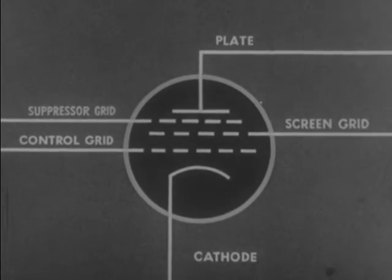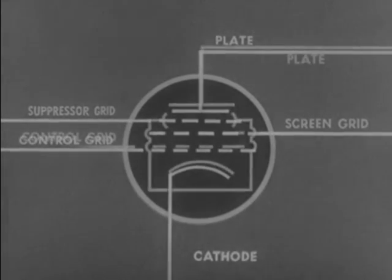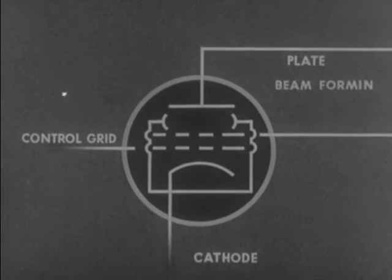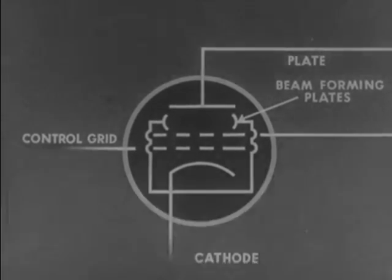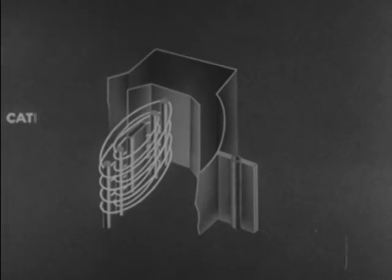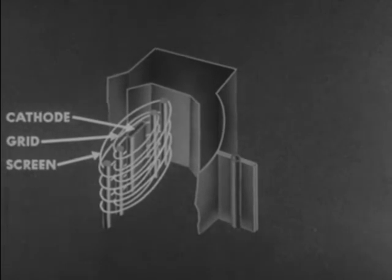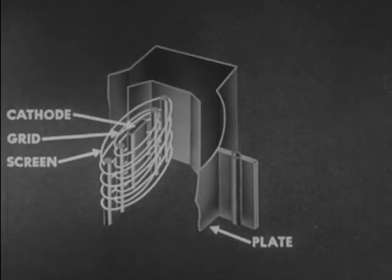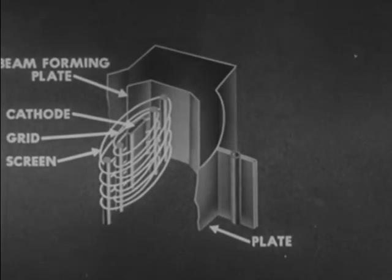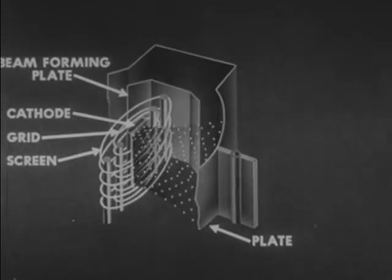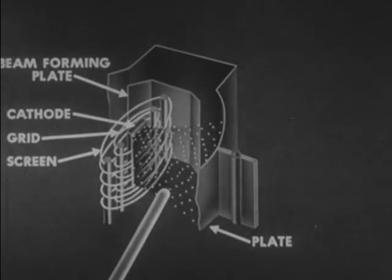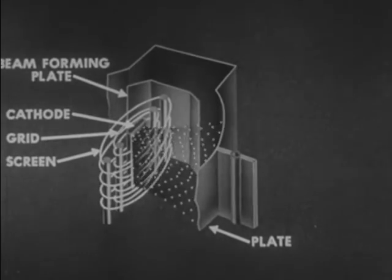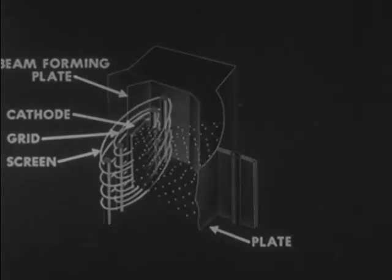The suppressor grid between the screen grid and the plate in the pentode may be omitted. Instead, what is known as beam forming plates are substituted. This is the symbol for the beam power output tube, built with the usual cathode, grid, screen, and plate. The beam forming plates are so placed as to direct the cathode-to-plate stream of electrons in a beam. Here, the stream of electrons carries the secondary electrons — which are knocked off — back to the plate, thereby eliminating the necessity for a suppressor grid. This tube is built into great power tubes or into the tiny peanut tube.